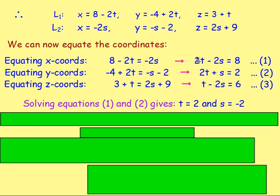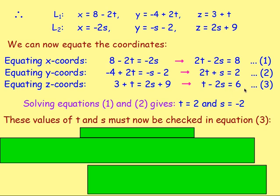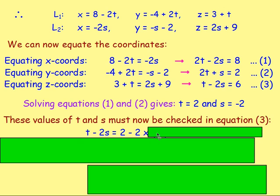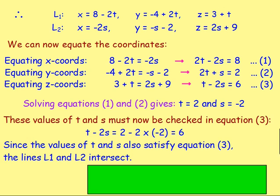Now we need to check these values in equation 3. With t = 2 and s = −2: t − 2s = 2 − 2(−2) = 2 + 4 = 6. That matches the right-hand side of equation 3, which equals 6. So the values of s and t satisfy all three equations, which means lines L1 and L2 do intersect.